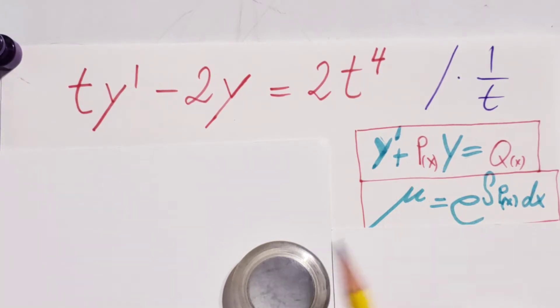This is the formula for it, right? We have y prime plus p(x)y equals q(x). And this would be my integrating factor itself: e to the power of integral p(x) dx.